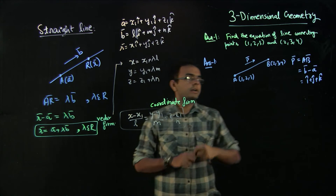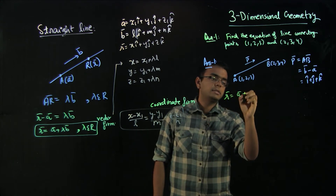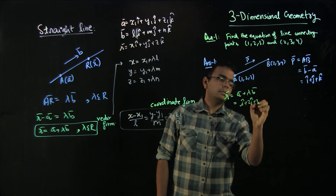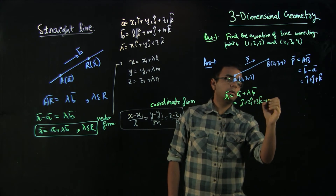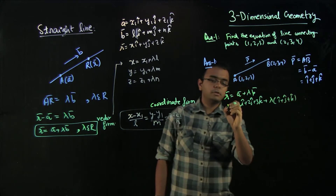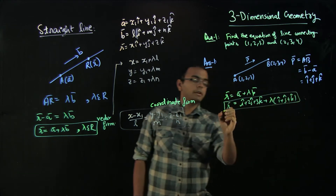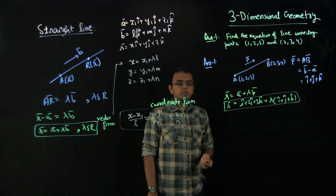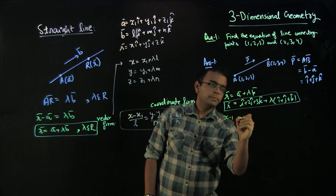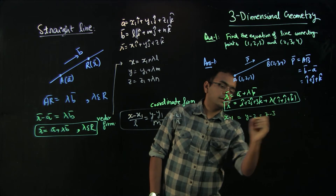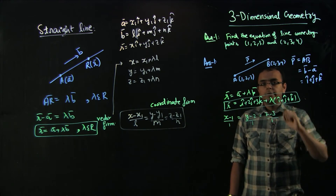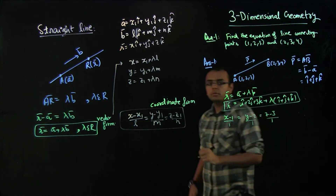So r vector equals (i-cap plus 2j-cap plus 3k-cap) plus lambda times (i-cap plus j-cap plus k-cap). This is the equation of the line in vector form. In coordinate form, you write (x minus 1) divided by 1 equals (y minus 2) divided by 1 equals (z minus 3) divided by 1. I hope this makes sense for how to find the equation of a line through two given points.